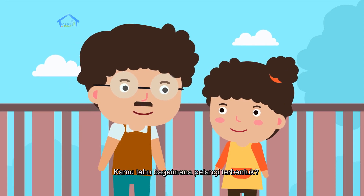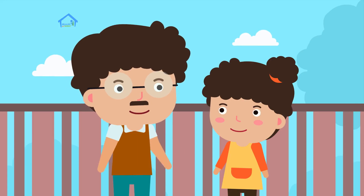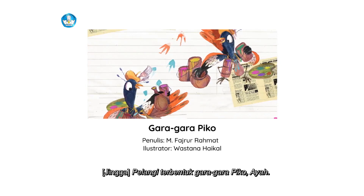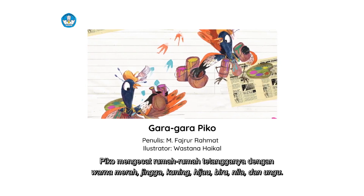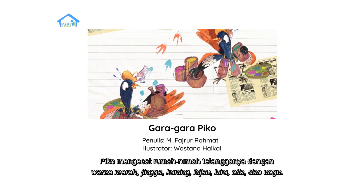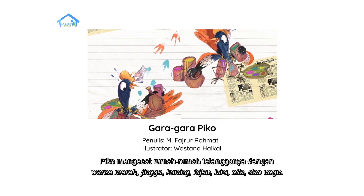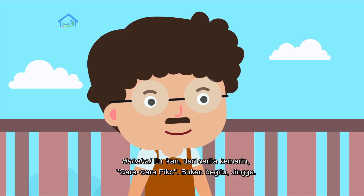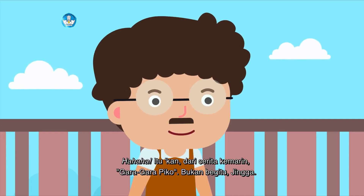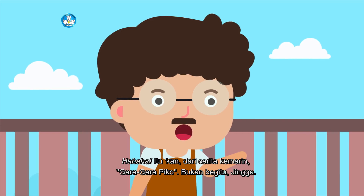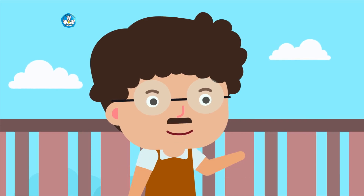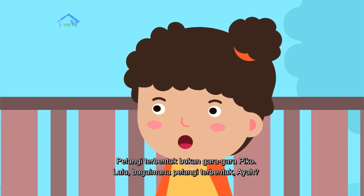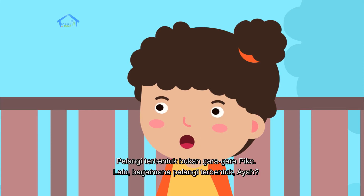Hari ini kita akan belajar tentang bagaimana pelangi terbentuk, wah pasti menyenangkan teman-teman! Kamu tahu bagaimana pelangi terbentuk? Aku tahu ayah! Pelangi terbentuk gara-gara Piko ayah, Piko mengecat rumah-rumah tetangganya dengan warna merah, jingga, kuning, hijau, biru, nila, dan ungu. Itu kan dari cerita kemarin, bukan begitu. Aku salah teman-teman, pelangi terbentuk bukan gara-gara Piko. Lalu bagaimana pelangi terbentuk ayah?